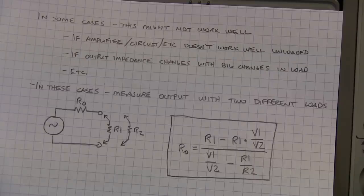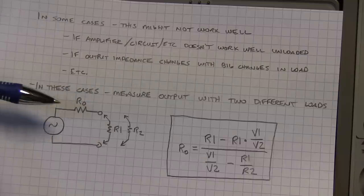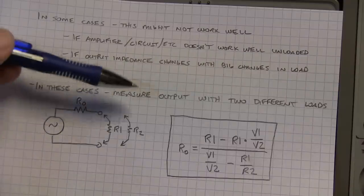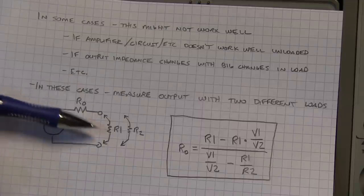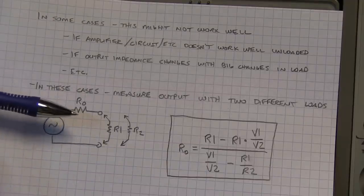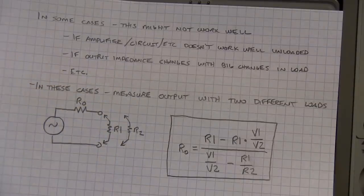So in those cases the method we used earlier where we measured the open circuit voltage and then the loaded circuit voltage might not be the best way. So in those cases we can actually do another method very similar though, is just measuring the output with two different load impedances. Connect up one load impedance, measure the output voltage, call that say V1, connect up another load called R2 and measure V2.